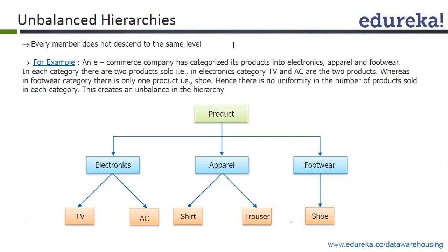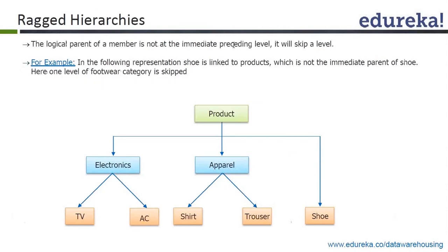The next type is ragged hierarchy, in which a level is skipped by a child. Using the same product example: the product has electronic products and apparels as product types, but shoe doesn't have any product type level — it skips the product type level and goes directly to the top product level. This kind of hierarchy where a child skips a level is called a ragged hierarchy.